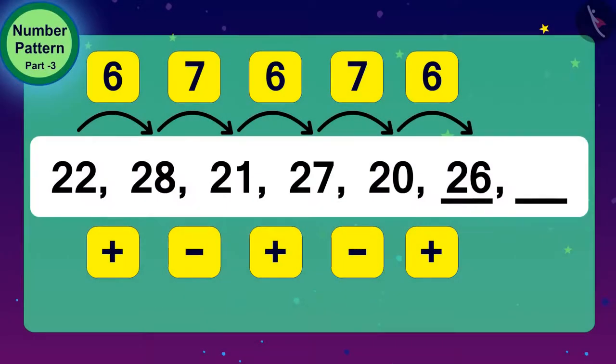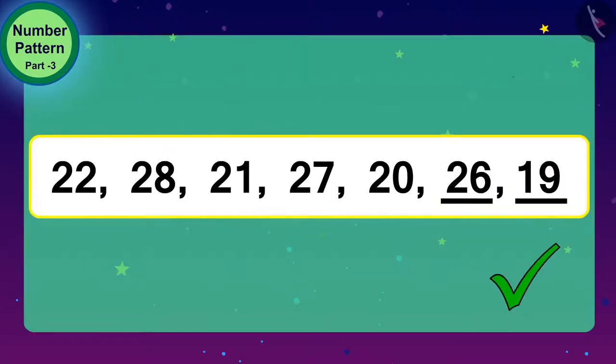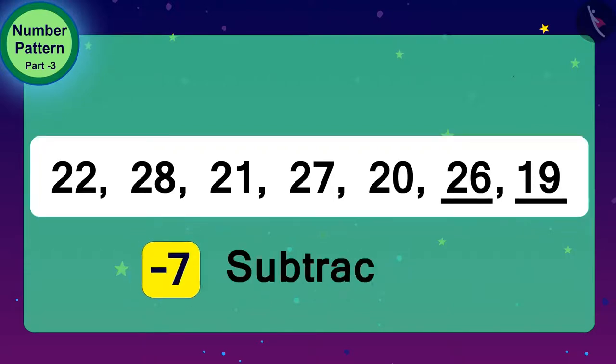And, now what do we have to do to fill these other spaces? Yes, we have to subtract 7 out of 26. 7 less than 26? 19. Here, we completed this number pattern perfectly by using the process of addition and subtraction.